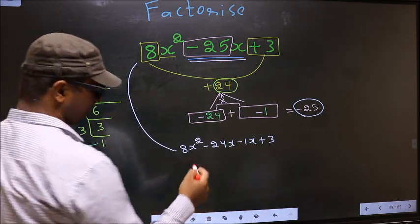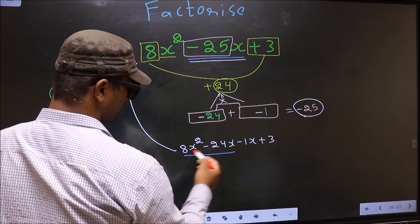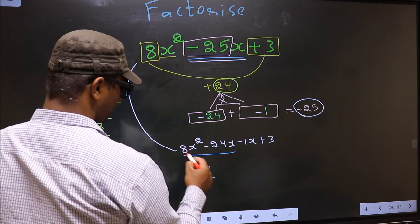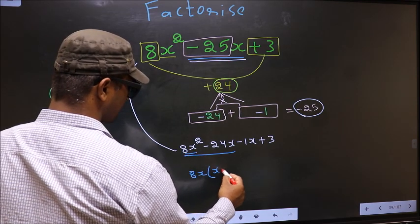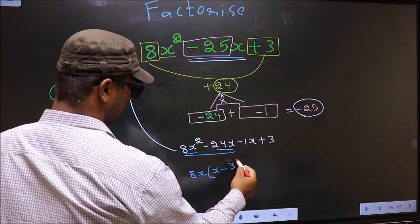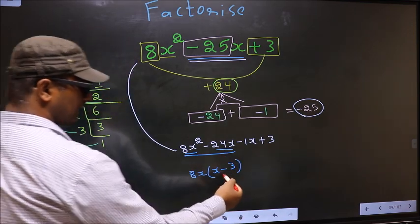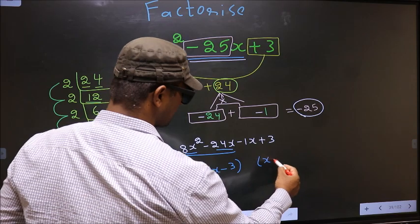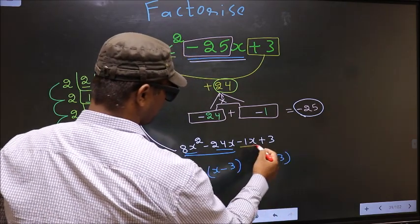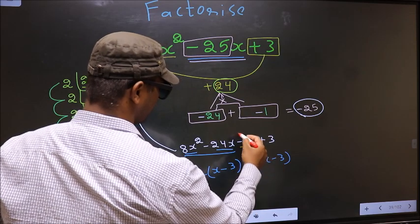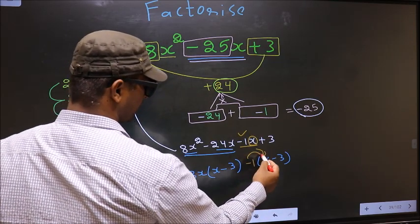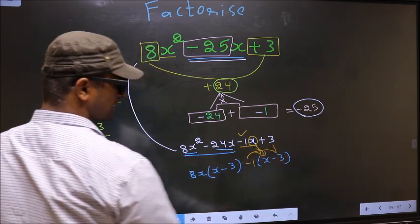Next, from these 2 terms, what can be taken out common is 8x. So here we get x minus 3. From this 8x out, so we are left with 3. Now whatever we got here, here also we should get the same thing. From this, x has gone inside, so outside you are left with minus 1. Even if you multiply and see, still you get the same thing.